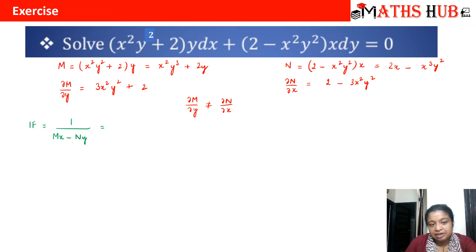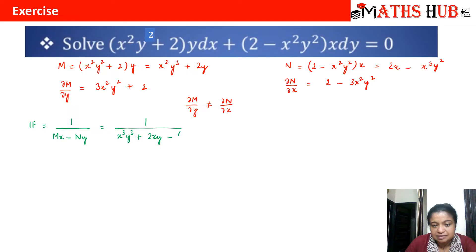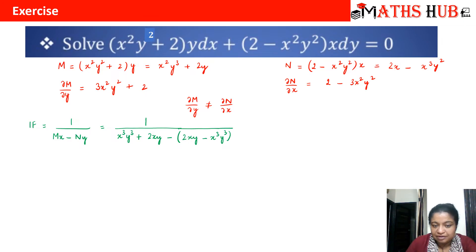Once we learn all the techniques of calculating the integrating factor, you will find there can be more than one integrating factor for a single differential equation. So let us multiply M with x: we get x³y³ + 2xy. Now multiply N with y: we get 2xy − x³y³. Opening the brackets, 2xy cancels and we get 2x³y³, so the denominator is 2x³y³.